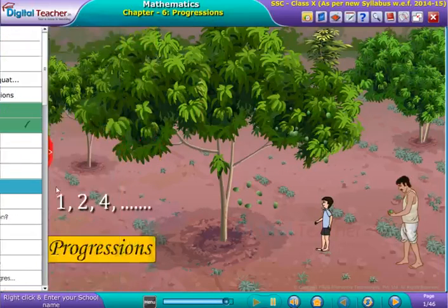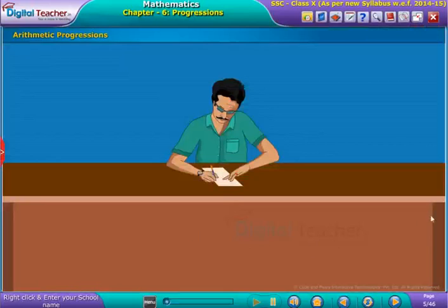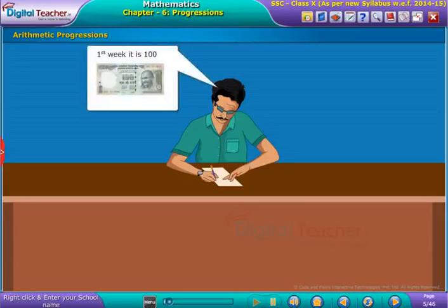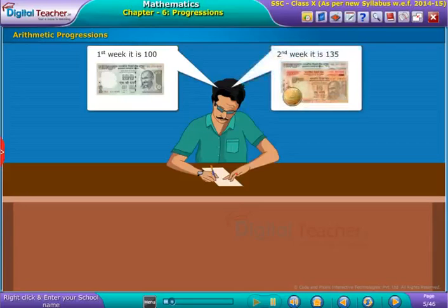Welcome to the chapter on progressions. Here is a man who is planning for savings. He wants to deposit 100 rupees in his account in the first week. Soon after that, he deposits 35 rupees in the account every week.